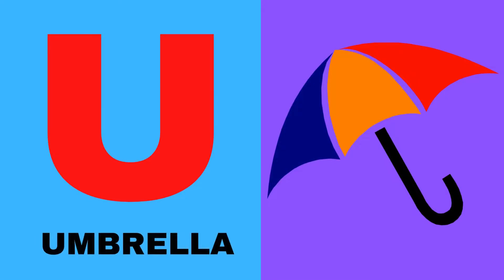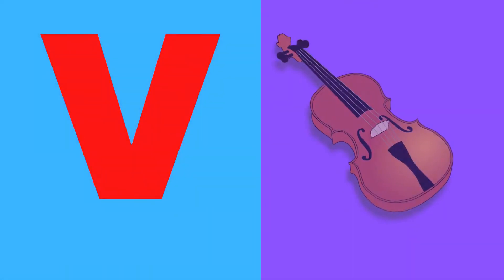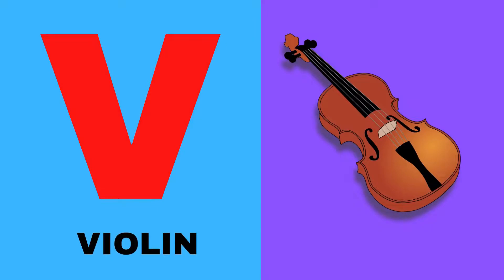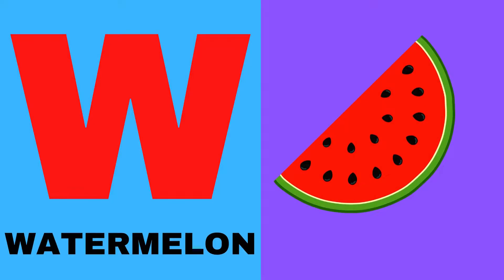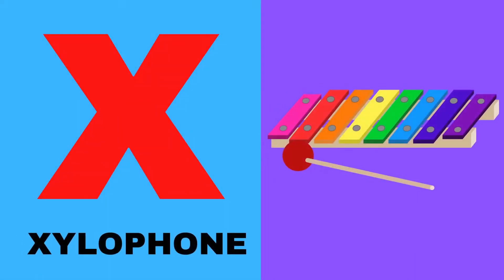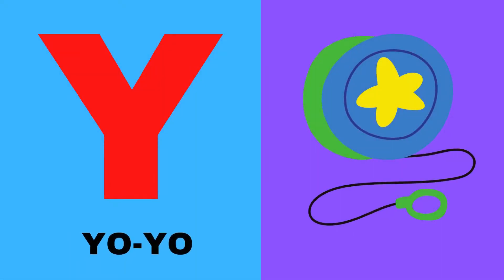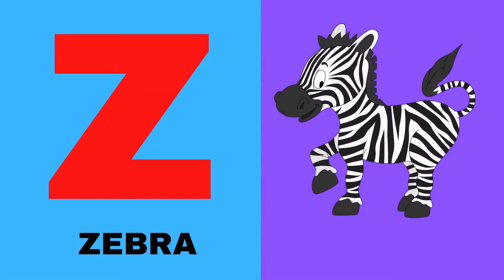U for umbrella, V for violin, W for watermelon, X for xylophone, Y for yo-yo, Z for zebra.